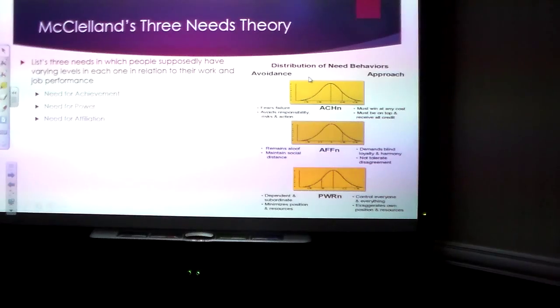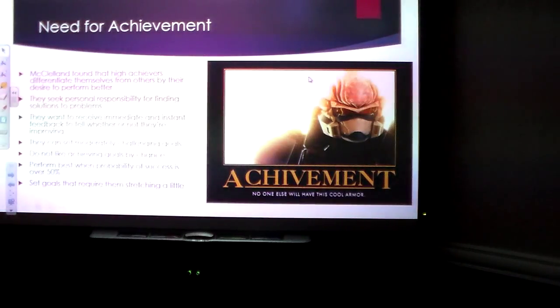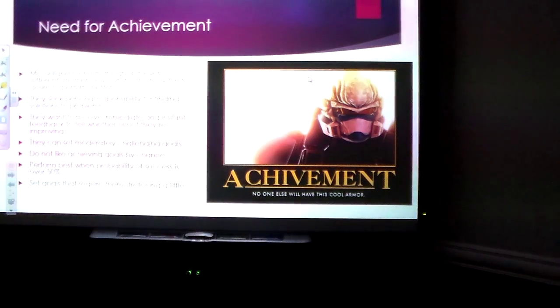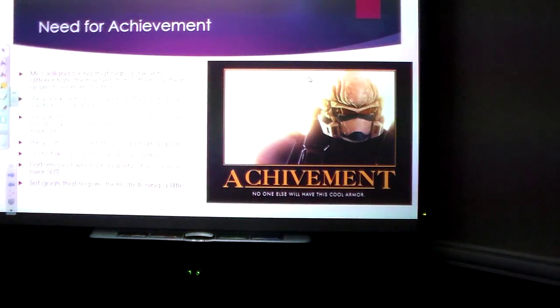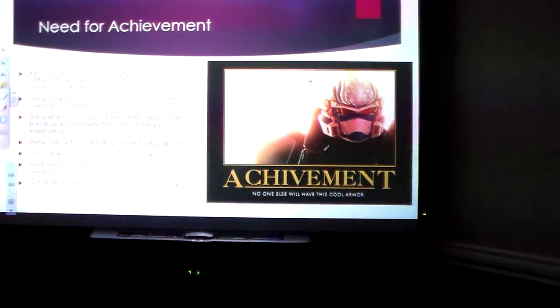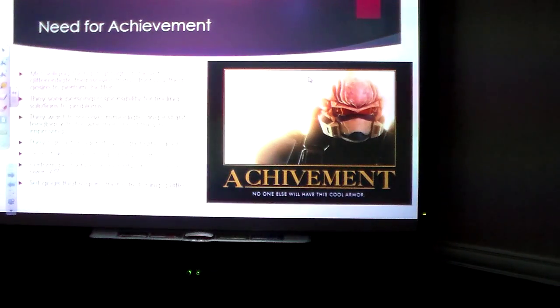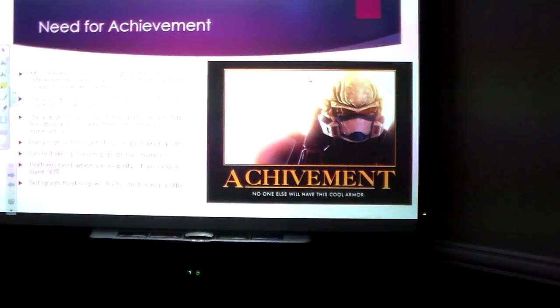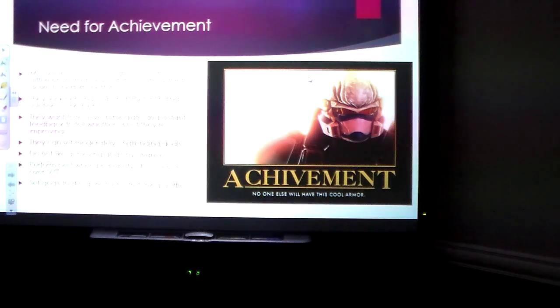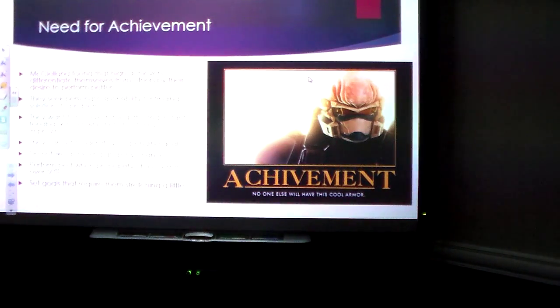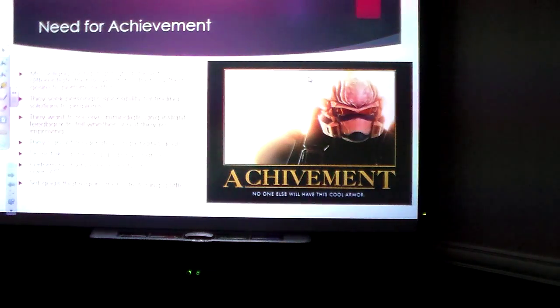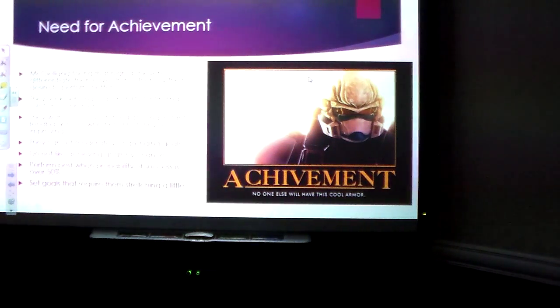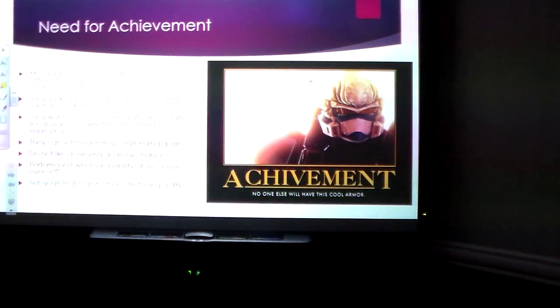McClellan's three needs theories is the need for achievement, the need for power, and the need for affiliation. For achievement, McClellan found that your high achievers differentiate themselves from others because they want to do better and they want to perform better whenever they possibly can. They want immediate feedback, and they want challenging goals, but they are only going to perform best when they know that they're going to be successful. I think most people in our society want to perform best when they know that they have a chance to be successful.